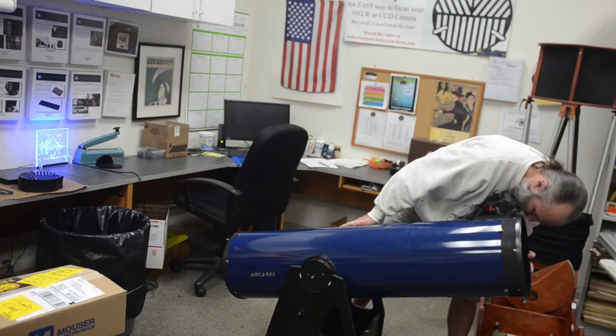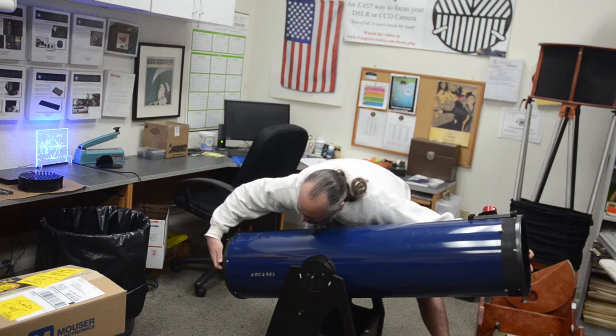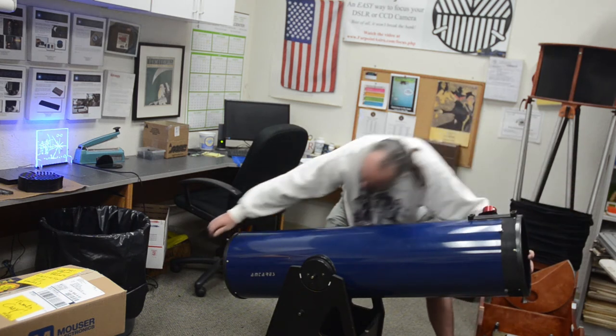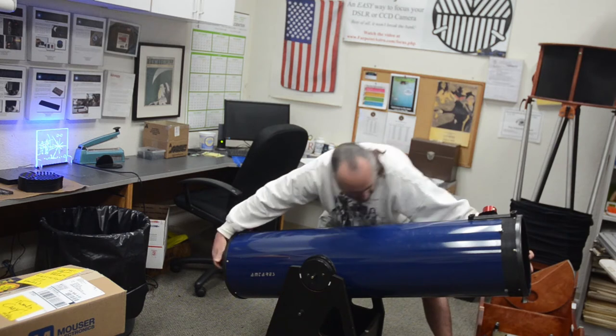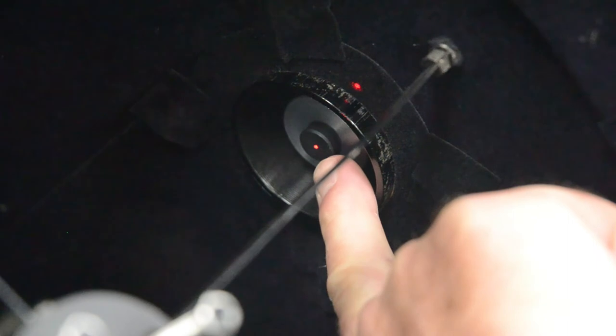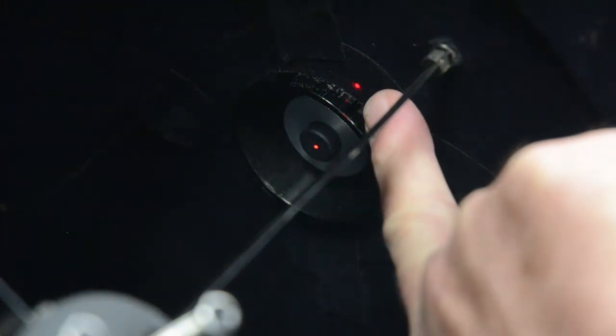To collimate the primary mirror, adjust the collimation screws until the return beam of the laser comes back upon the outgoing beam. You don't have to be exact. Within a half centimeter or so is fine. Because you are going to finish collimation with the Cheshire, you might be close enough right off to go straight to the Cheshire. Here's the outgoing beam here and here's the return beam here.